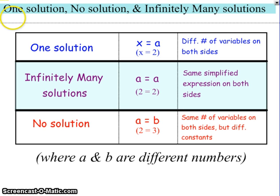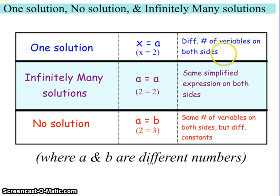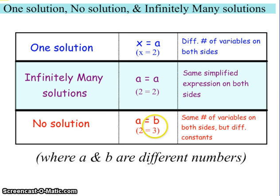So here they are all compared together. One solution will have x equal a number; a key clue is different variable coefficients on both sides when you've simplified. Infinitely many solutions will result in a number equaling itself, and the key clue is having the same expression on both sides. No solutions will have a number equaling a different number, and the clue to look for is the same number of variables on each side but different constants.